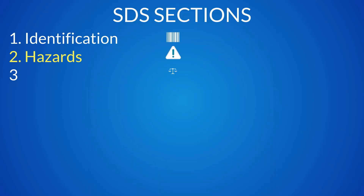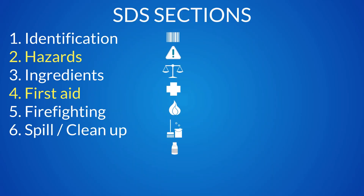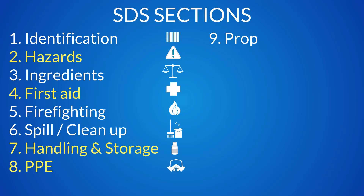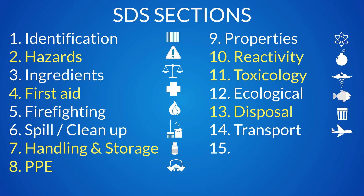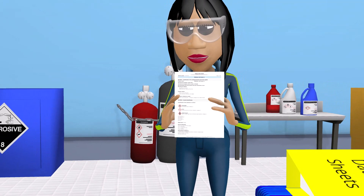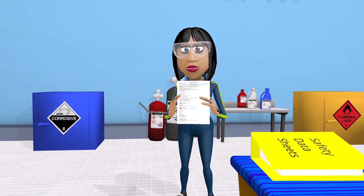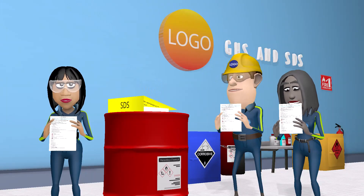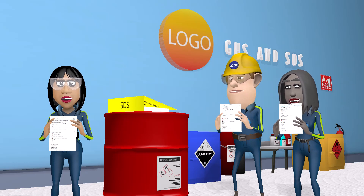The SDS is comprised of 16 sections covering information on hazards, first aid, handling and storage, PPE, reactivity, toxicology, and disposal, to name just a few. Before using any substance, the manufacturer's SDS must be obtained, thoroughly reviewed, and any hazards mitigated. Anyone exposed to a substance has the right to know and access the SDS and other relevant information.